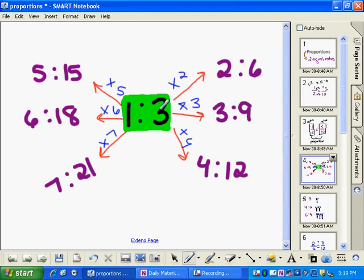3 to 9 is equal to the ratio 1 to 3, because if I multiply both numbers by 3, I get 3 and 9, and they, therefore, form a proportion. So all of these ratios here are proportional to the ratio 1 to 3, or they're all proportional to each other, really.